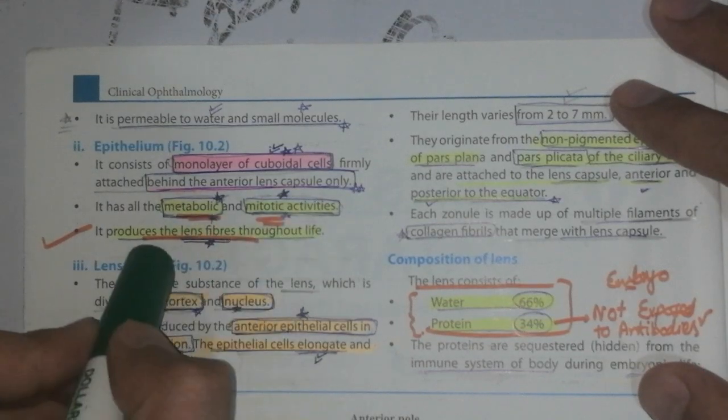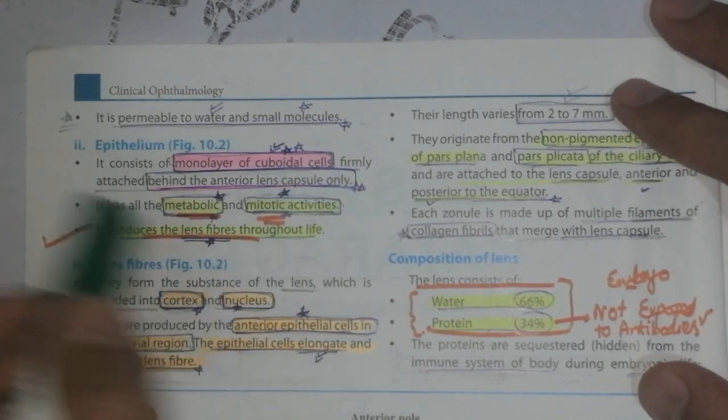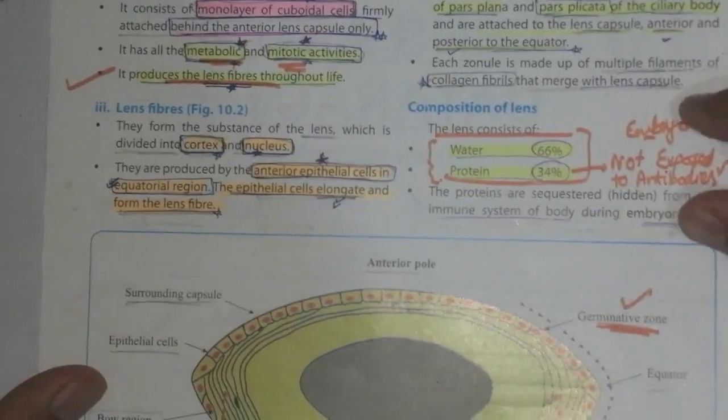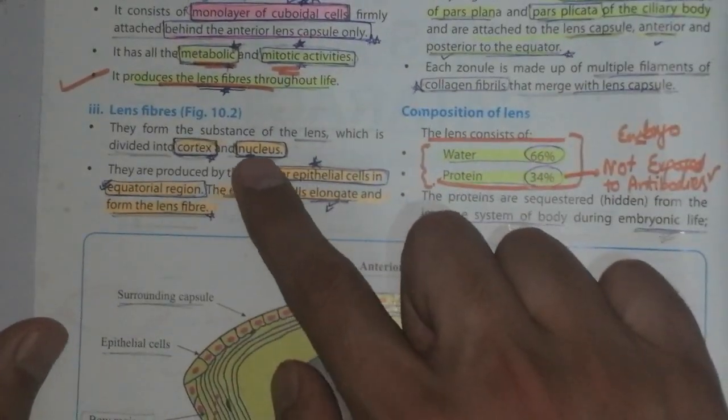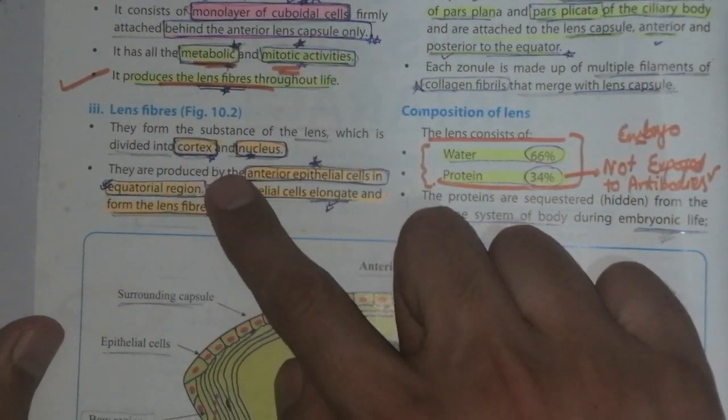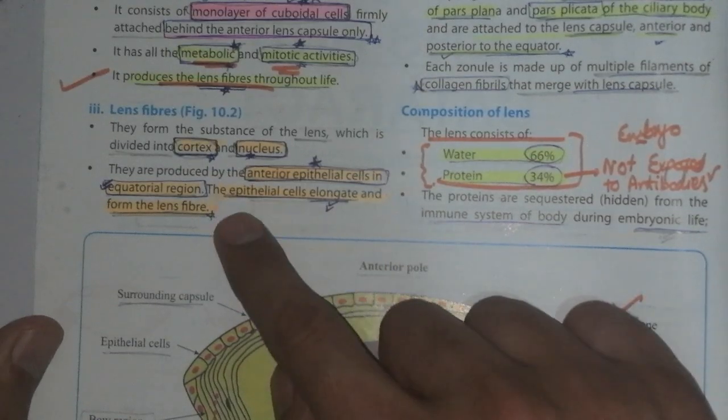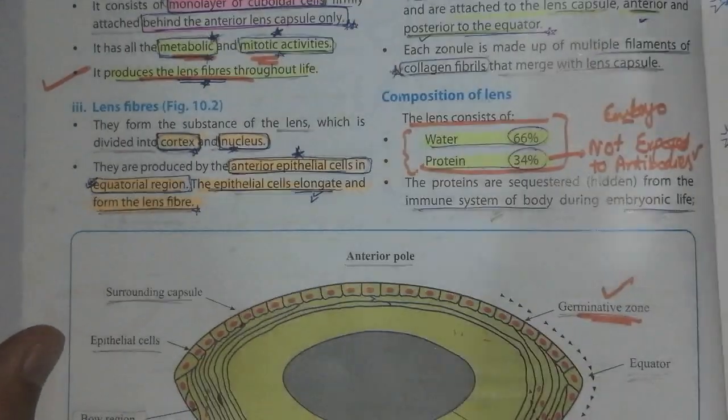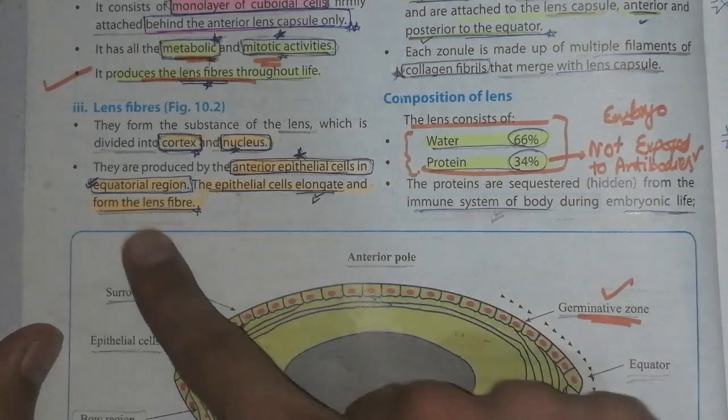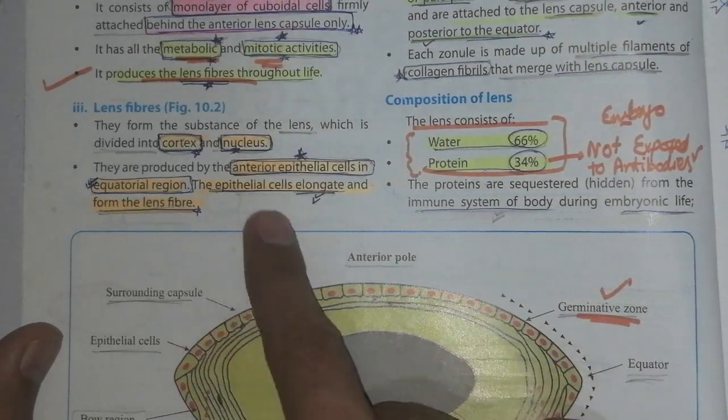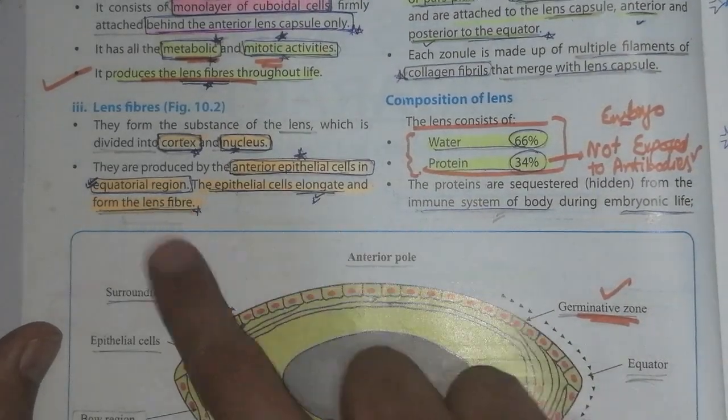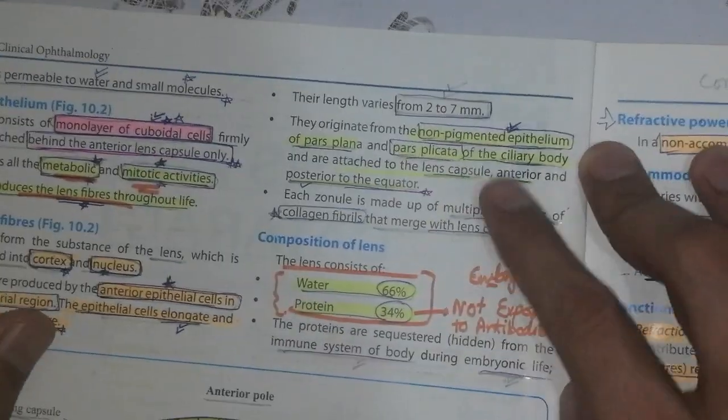It produces lens fibers throughout life. Now lens fibers: they form the substance of the lens, which is divided into the cortex and the nucleus. They are produced by anterior epithelial cells in the equatorial region. The epithelial cells elongate and form the lens fiber.